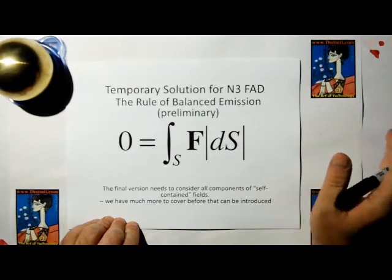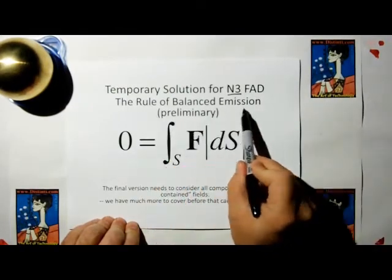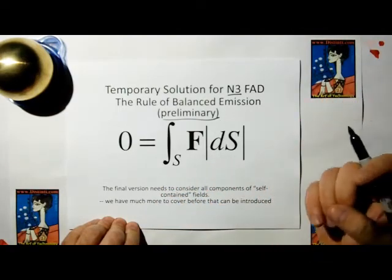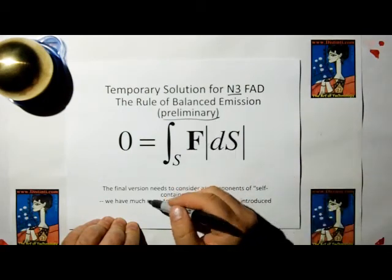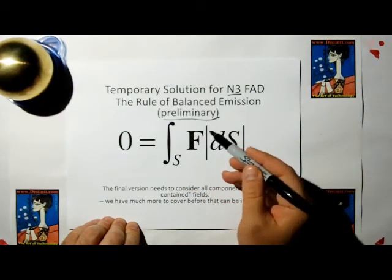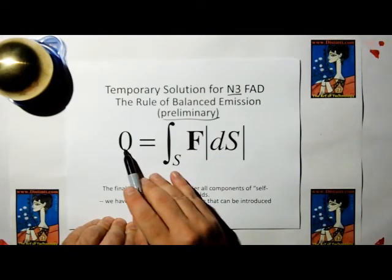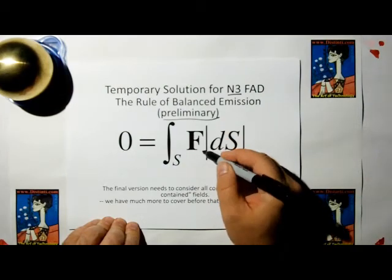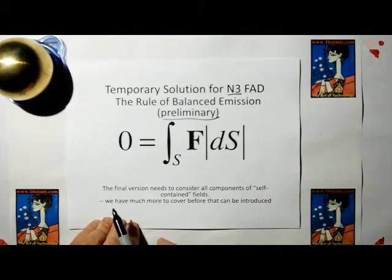So what we have here is a temporary solution for Newton's third law. I call it the rule of balanced emission. This is preliminary. We need to talk a lot more about fields. We need to understand more about fields before we can write a final solution. But for now, we're just going to say the surface integral of the force times the differential surface area must equal to zero. This is preliminary. This is not a dot product because that would come out to be a real non-zero value, even if the forces are balanced.